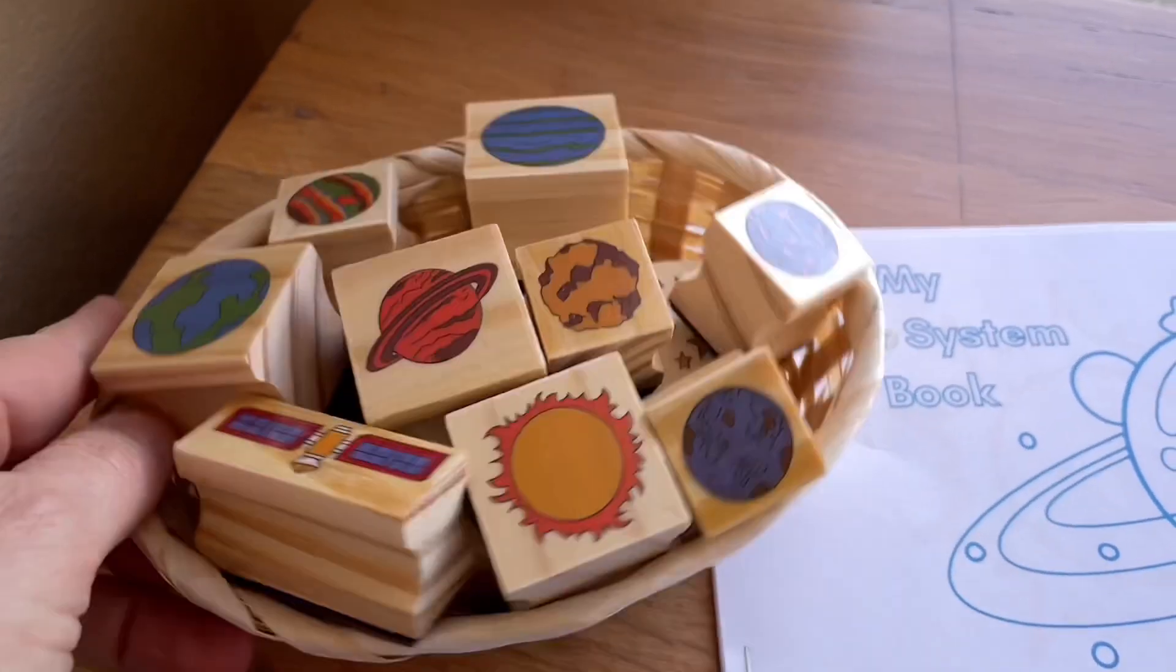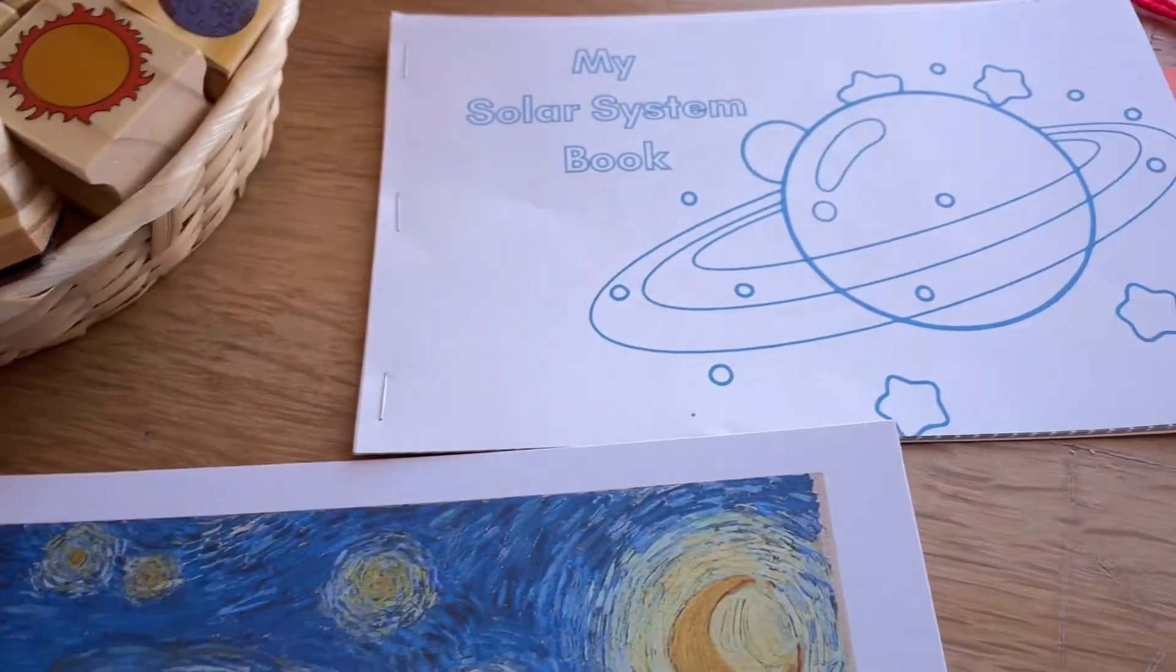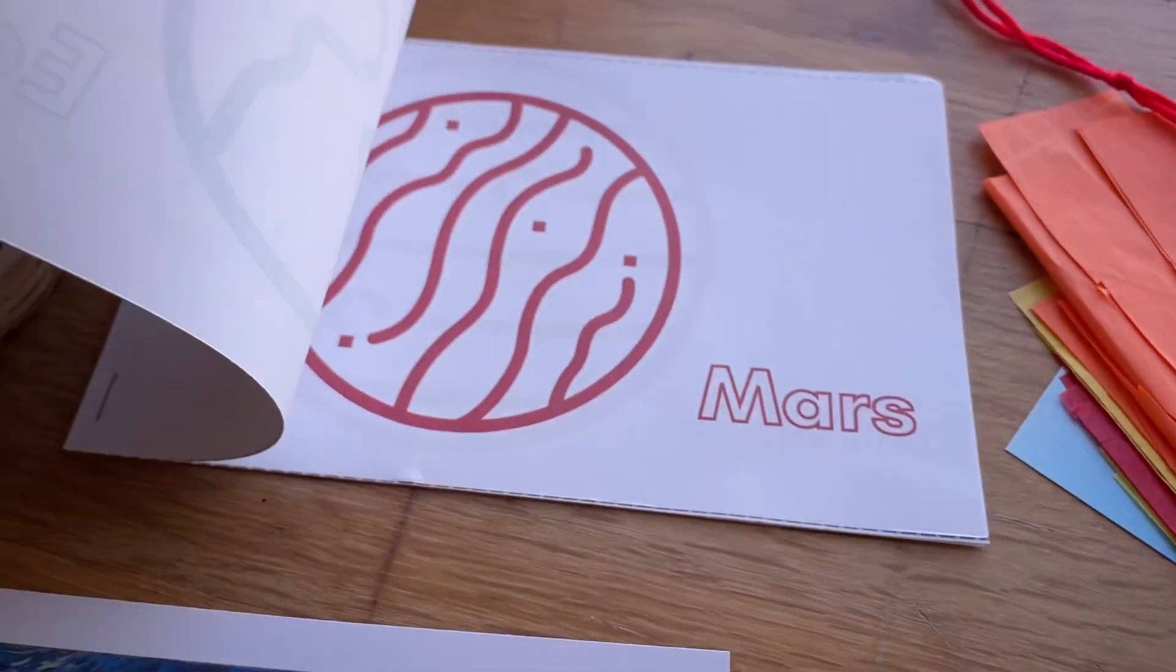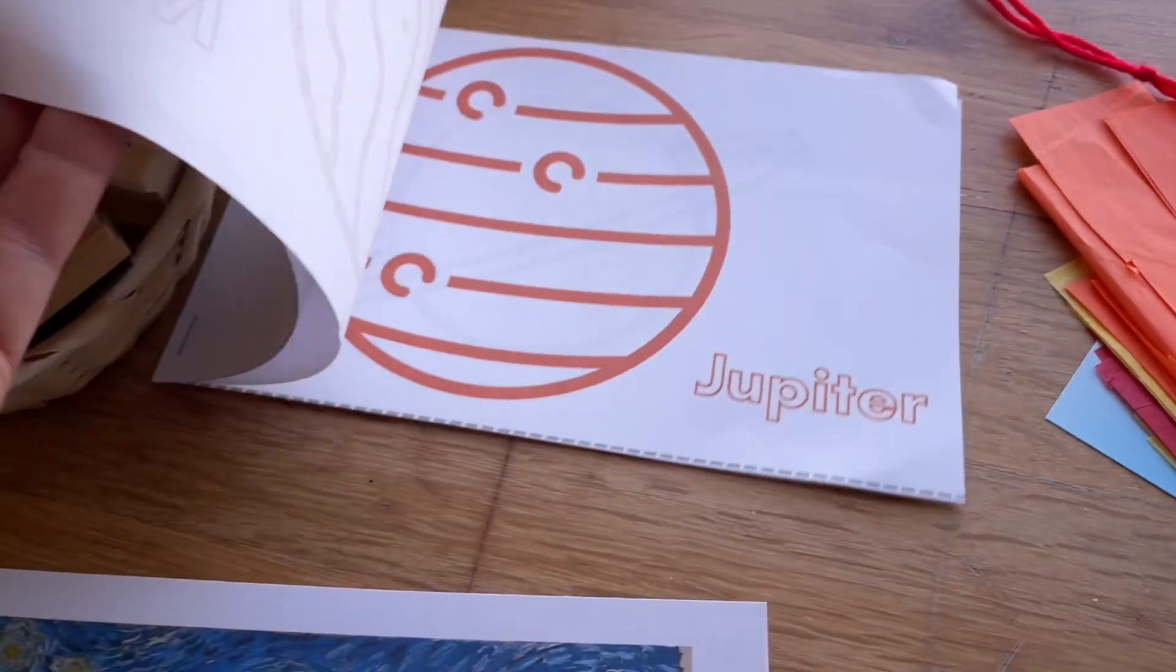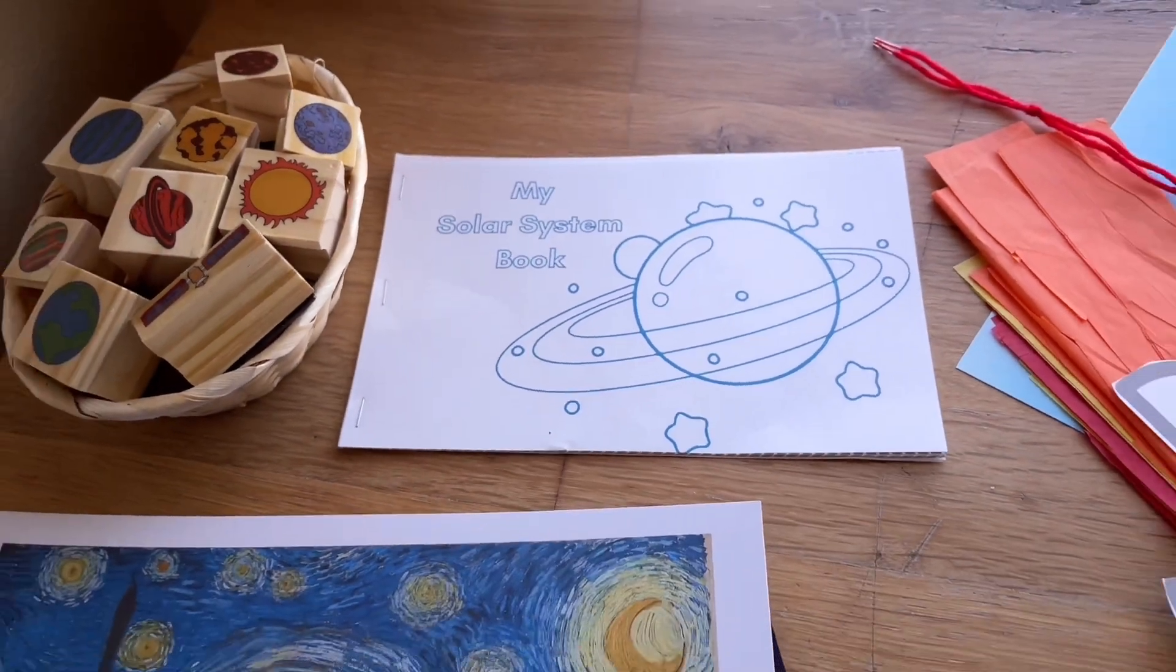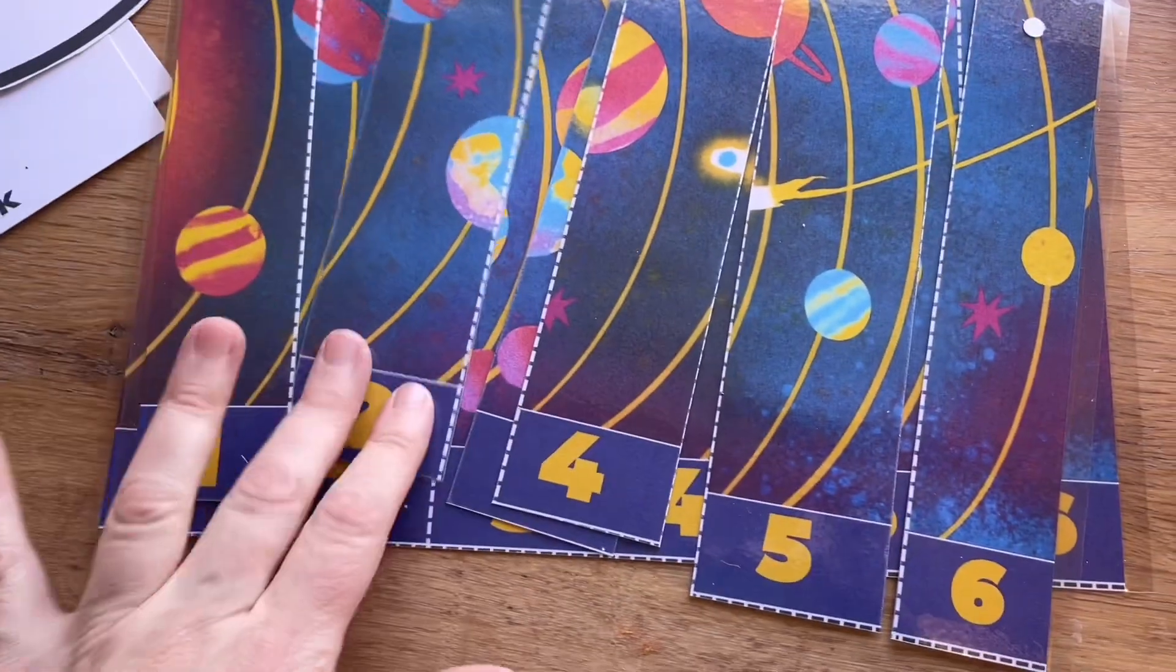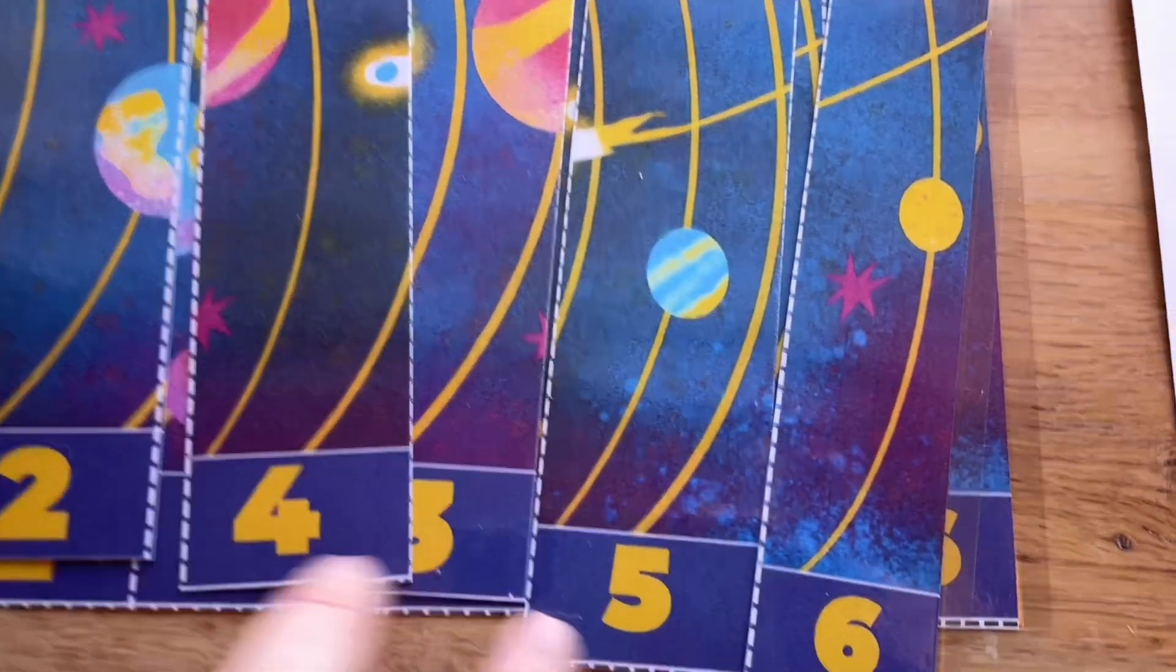For my writing center so far I just have a bunch of space stamps and then this little book with all the different planets that I've made. I'm still working on some coloring sheets I'll have those added to my packet soon. And then also this really cute solar system counting puzzle, very simple but very nice. I printed two and cut out the second one so they can just layer that on top.